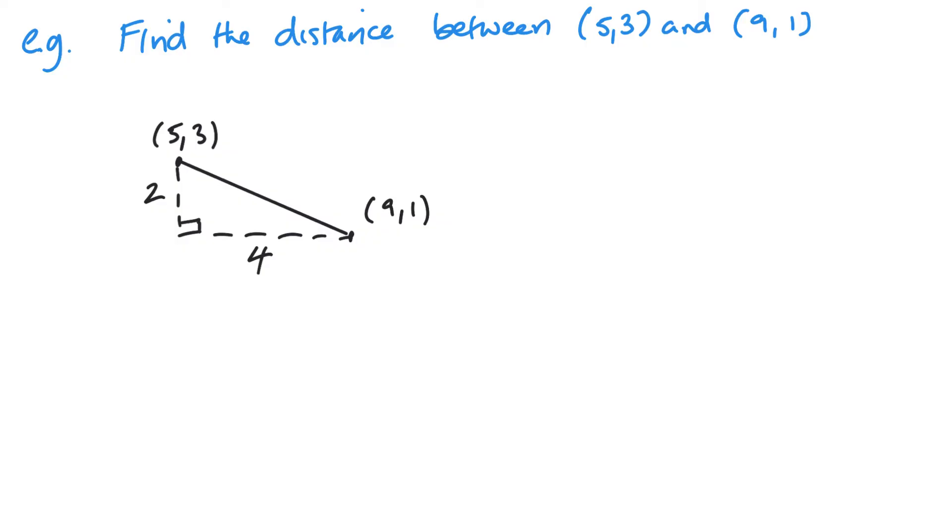So I can see that this distance, let's call it D, is going to be 2 squared plus 4 squared. Does this matter the order? So it's 4 plus 16, which is root 20, which is 2 root 5.